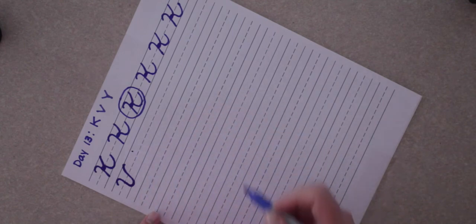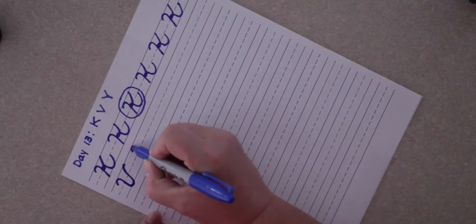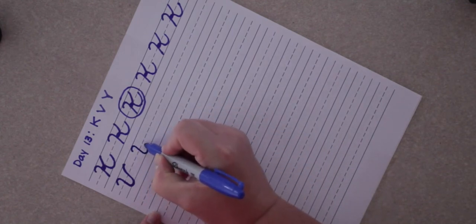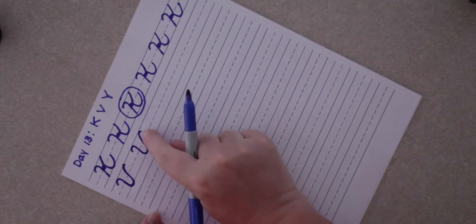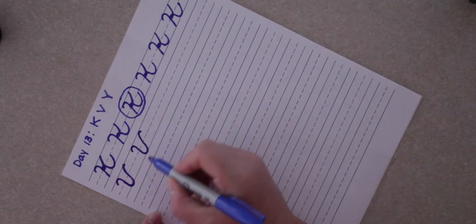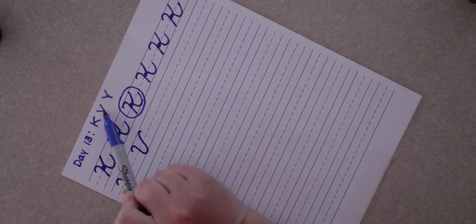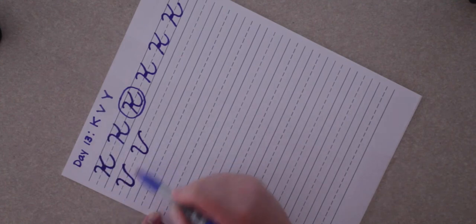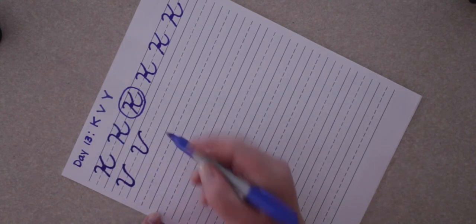It's all one motion. It starts a little bit below the top line, curves down, back up with another little curve out. Now notice a V in print is pointed at the bottom. A V in cursive is not.